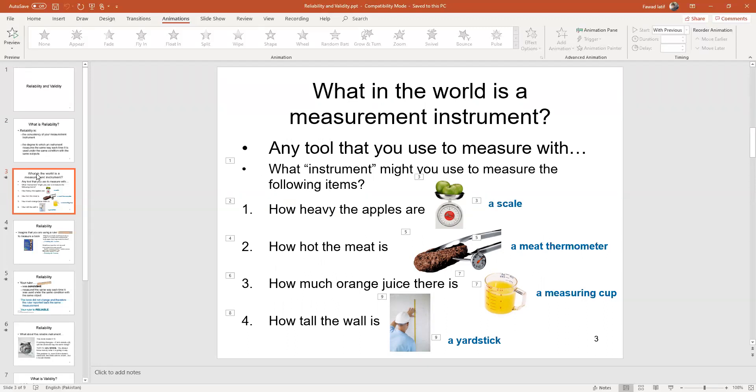So your scale should give similar results. Or how hot the meat is - a meat thermometer will give you similar results if meat is being heated for a certain amount of time. Or how much orange juice is in a measuring cup, unless the conditions change and it's shifted from a room to maybe a balcony where the sun is out, so the amount of orange juice might change.